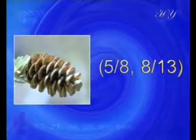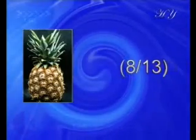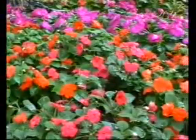These spiral numbers in plants are: 5 over 8 and 8 over 13 in pine cones; 8 over 13 in pineapples; 21 over 34 in the central florets of the daisy; and 21 over 34, 34 over 55, and 55 over 89 in sunflowers.